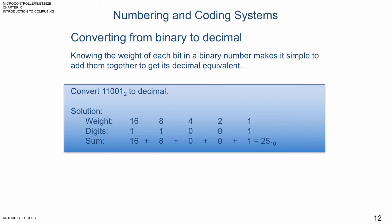So let's take a look at another example here. Again, knowing the weight of each bit in a binary number, making it simple to add them together to get the decimal equivalent. We're going to convert 11001 base 2 to its decimal equivalent. So if we look at each of the weighted values, we have a weight of 16, a weight of 8, a weight of 4, a weight of 2, and 1. But the digits in those columns, 1, 1, 0, 0, 1, will give us our multipliers.